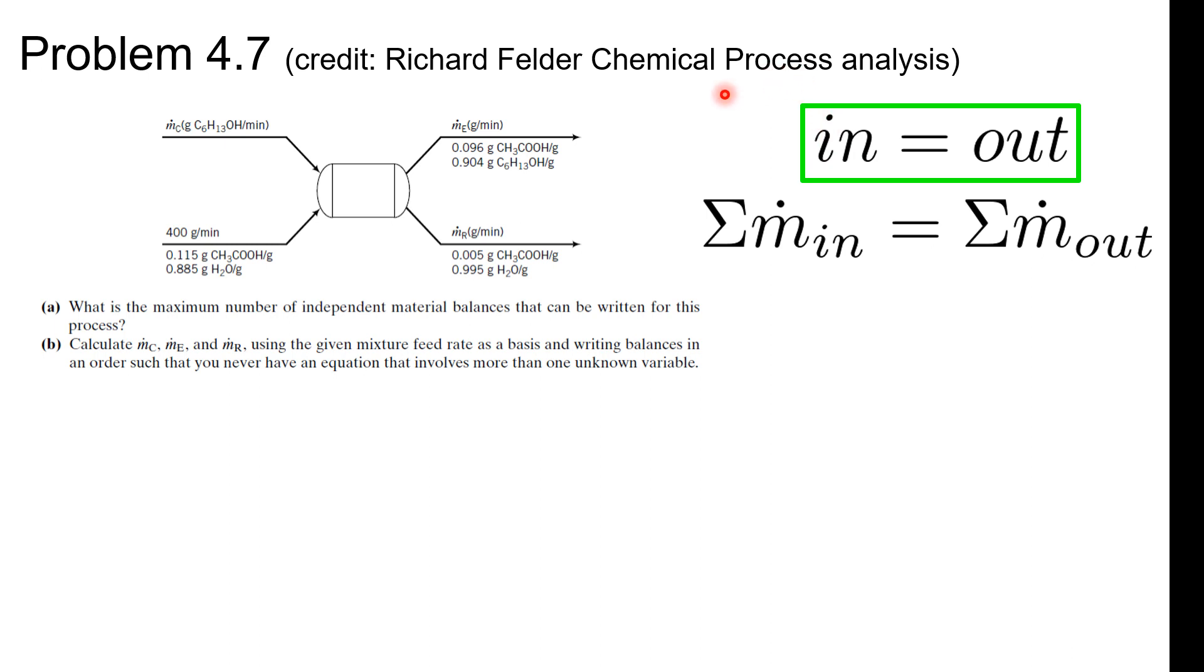If you write the mass balance a billion times, you should have it tattooed on your forehead by now: accumulation equals in minus out. But we're going to just assume that everything in is equal to everything out because there's no information about any reaction. We got to add up all the mass flow rates going in and set them equal to the mass flow rates going out.